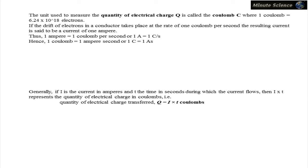The unit used to measure the quantity of electrical charge, Q, is called the Coulomb, C, where 1 Coulomb equals 6.24 times 10 to the power 18 electrons.